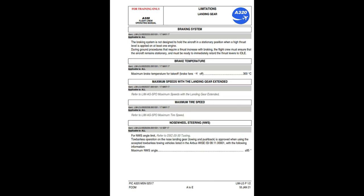Braking system: the braking system is not designed to hold the aircraft in a stationary position when a high thrust level is applied on at least one engine. During ground procedures that require a thrust increase with braking, the flight crew must ensure that the aircraft remains stationary and must be ready to immediately retard the thrust levers to idle. Maximum brake temperature for takeoff (brake fans off): 300°C. Maximum speeds with the landing gear extended: refer to LIM-AG-SPD. Maximum tire speed: refer to LIM-AG-SPD. Nose wheel steering (NWS): for NWS angle limit, refer to DSC-20-30 taxiing.